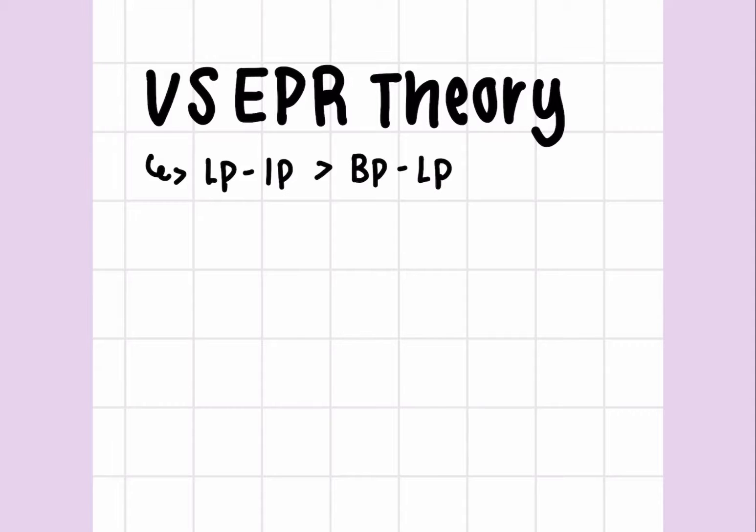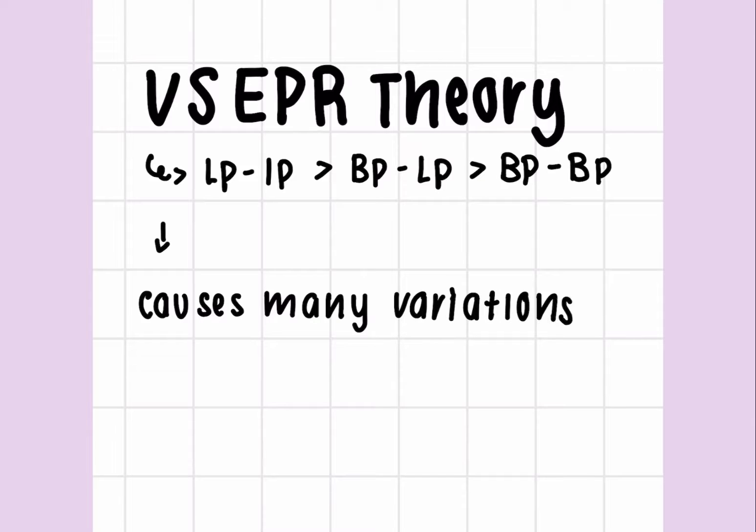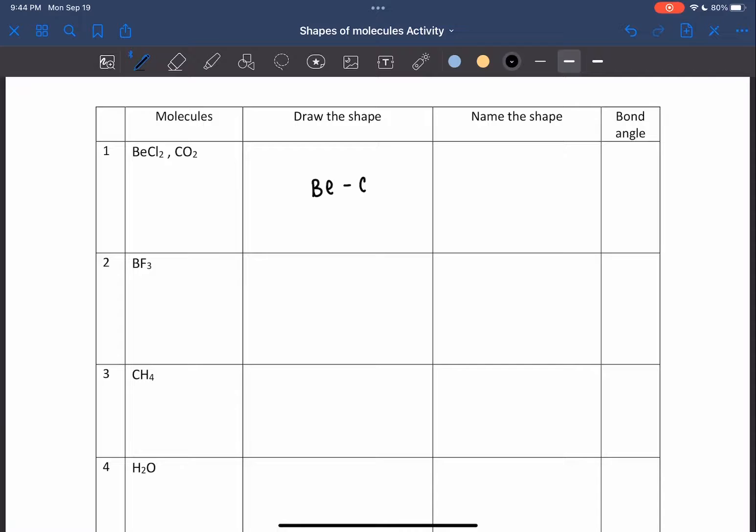The shapes of molecules are determined by the VSEPR theory, which states that lone pair-lone pair repulsion is greater than bond pair-lone pair repulsion, which is greater than bond pair-bond pair repulsion. This causes many variations in shapes of molecules.